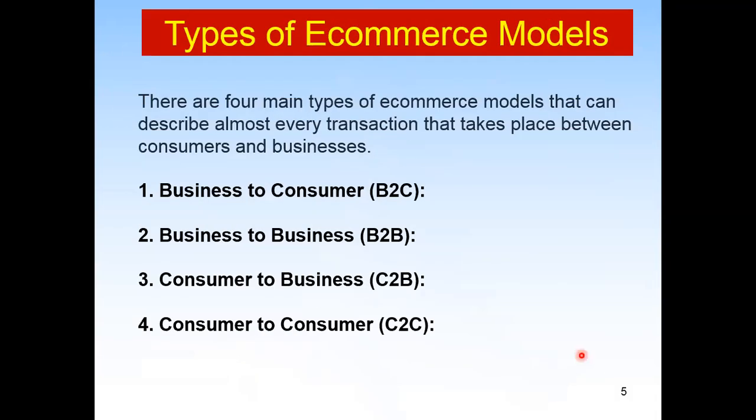There are four main types of e-commerce models that describe almost every transaction between consumers and businesses. The first is Business to Consumer (B2C), where a business makes something and a consumer purchases it. The second is Business to Business (B2B) — for example, a software company designing a learning management system (LMS) or campus management system and selling it to an educational institute, which is itself a business purchasing from another business to facilitate its students.